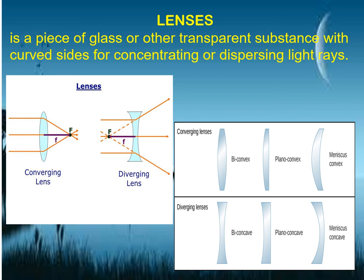We have the converging lens and the diverging lens. The converging lens appears somewhat rounded, while the diverging lens appears curved inward. Examples of converging lenses include the bi-convex or double convex, plano convex, and meniscus convex. In diverging lenses, we have the bi-concave or double concave, plano concave, and meniscus concave.